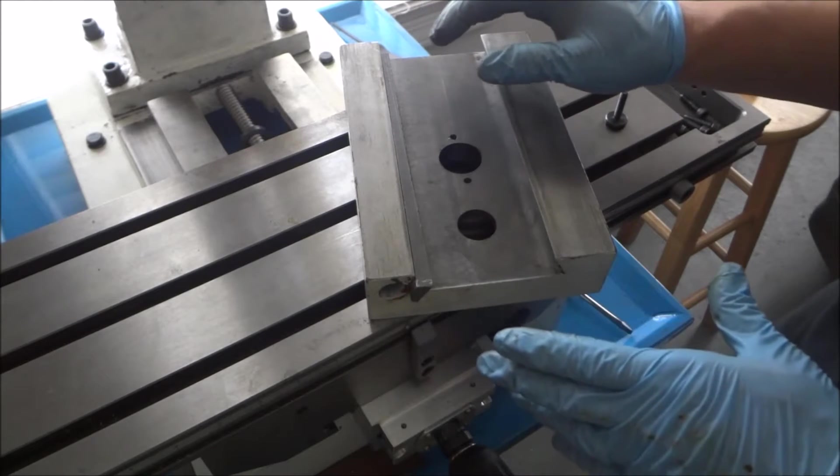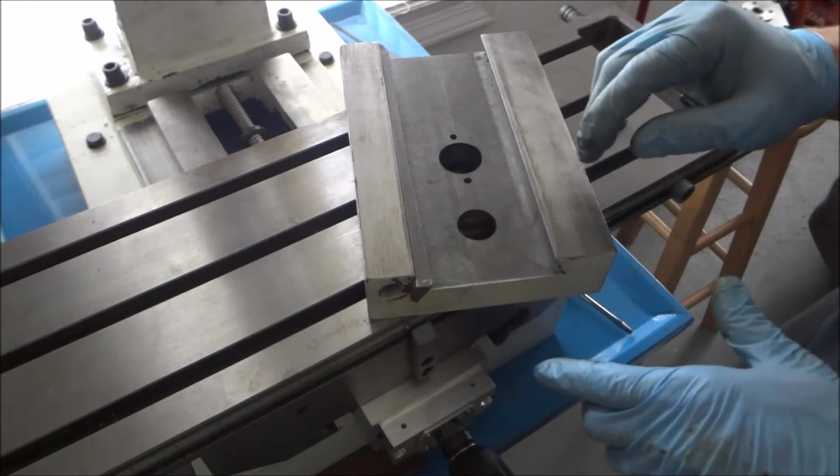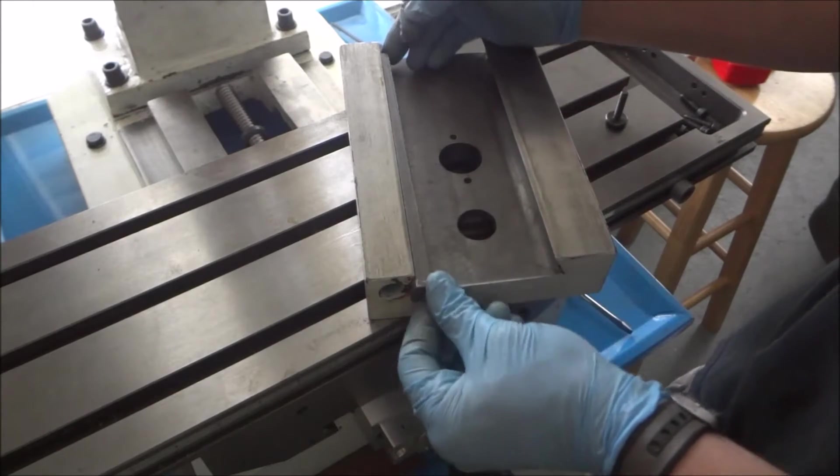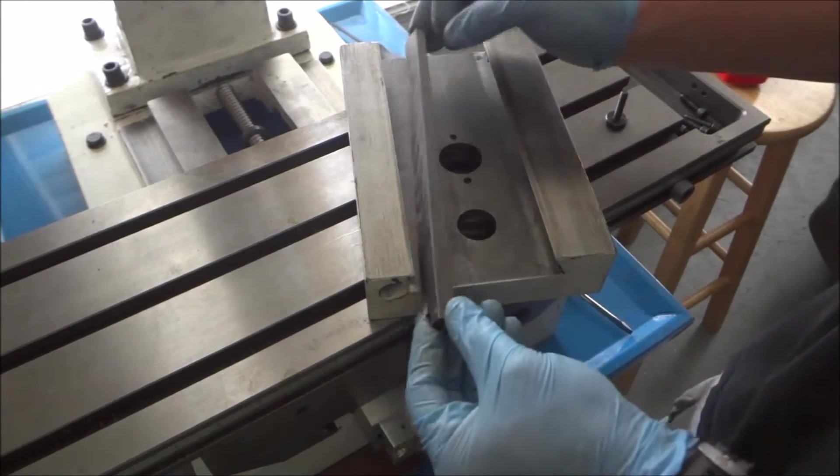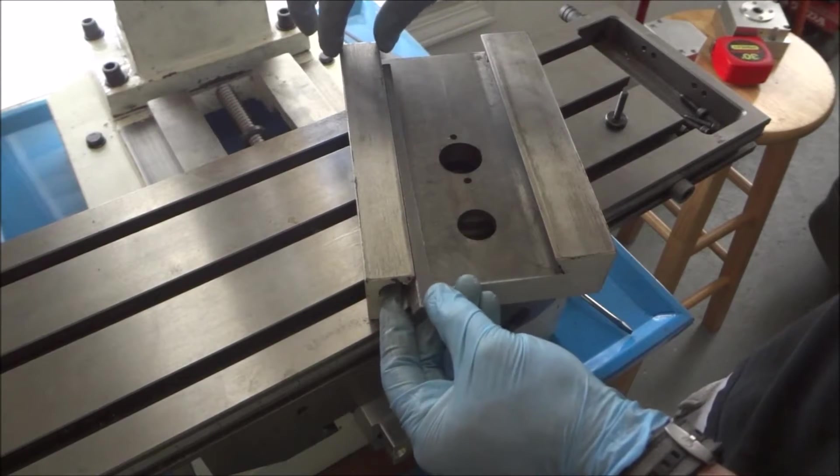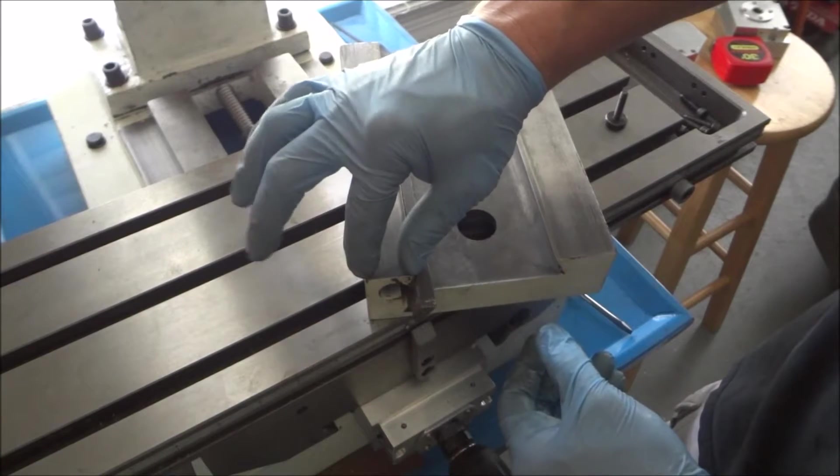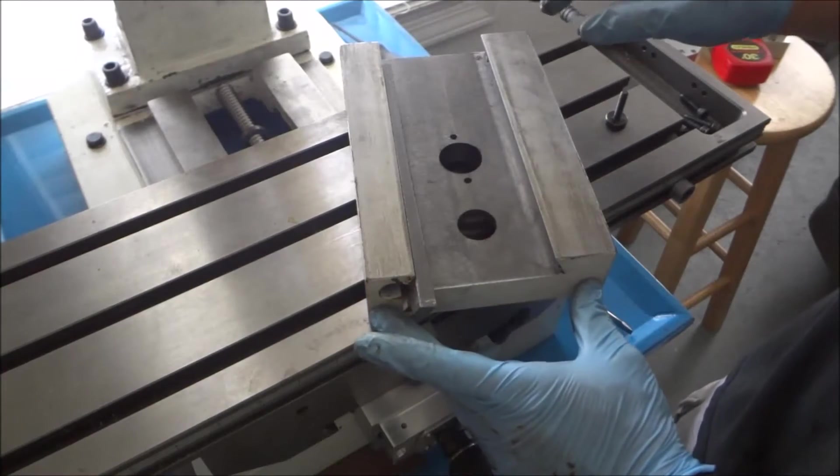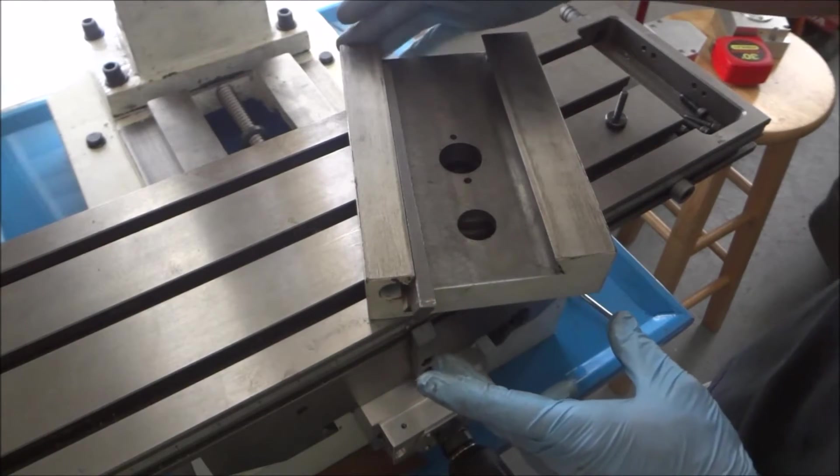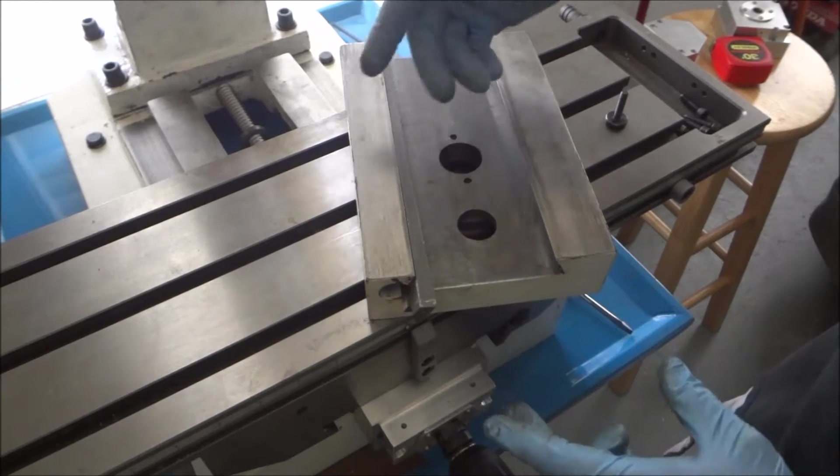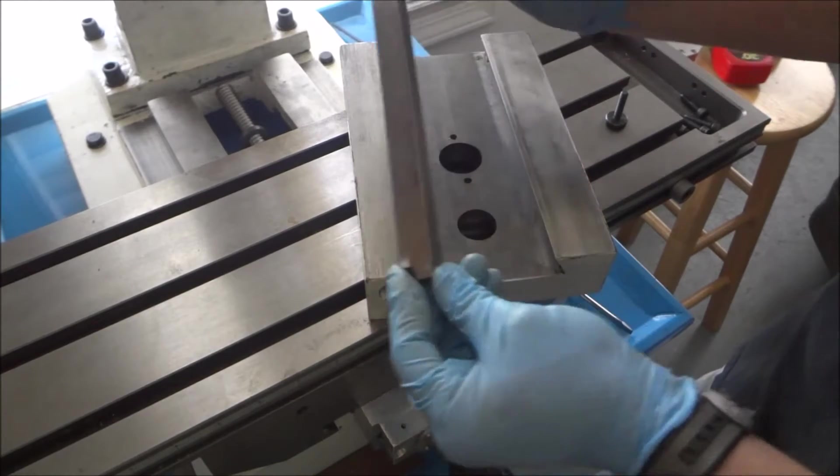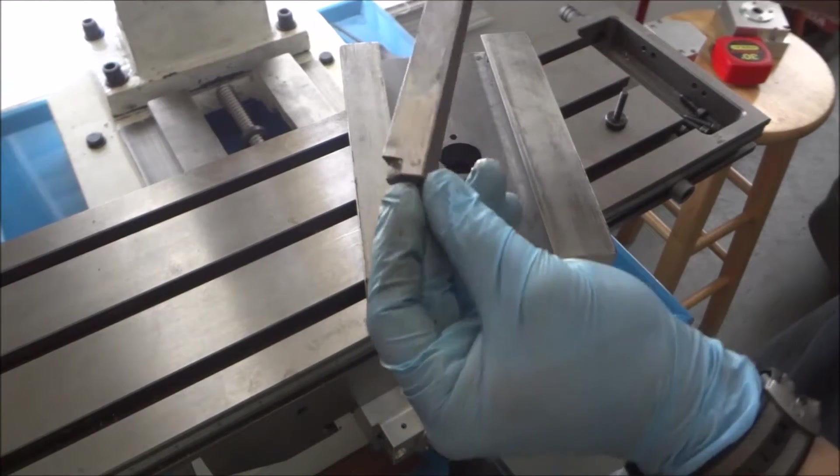One thing I wanted to point out that I didn't show in the disassembly video is how to remove these tapered gibs. The dovetail on one end is wider than the other - this is the top and this is the bottom. This is my z-axis and the gib here is tapered as well, thinner here and thicker here.